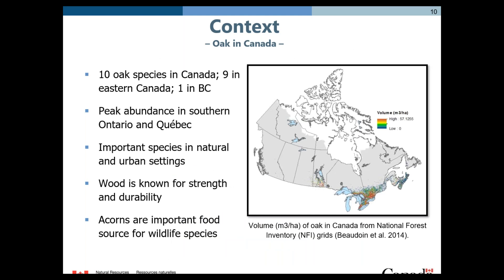Before talking about oak wilt, I'd like to take a second to talk about oaks in Canada. There are ten species of oak across the country — nine in the eastern portion and one species, the endangered Garry oak, found in British Columbia. Oaks are important in natural settings, providing habitat and food for wildlife, and in urban settings they're often prized yard and street trees. Wood from oaks is renowned for its strength and durability. Shown on the map are oak volumes across the country from the NFI grids product developed by André Beaudoin and colleagues at the Laurentian Forestry Centre in Quebec.